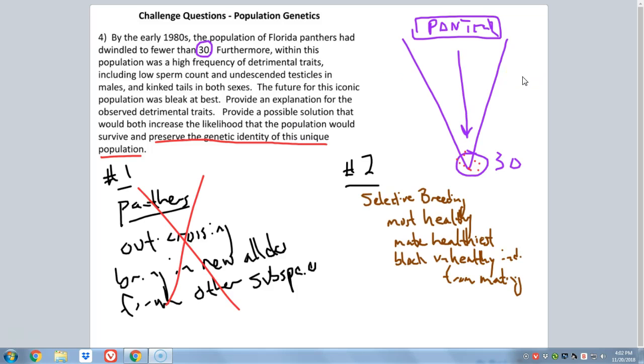Pick your best in whatever best is, and only mate them. That's the only strategy that would work for the Florida Panthers, while also preserving their unique genetic identity, because we wouldn't require any outbreeding. We would only use the healthiest of the Panthers, breed them with one another, and hope that each subsequent generation became healthier than the one before it.